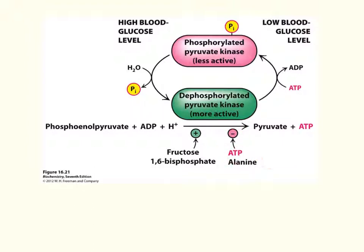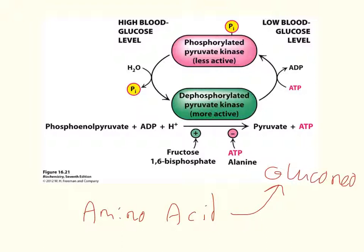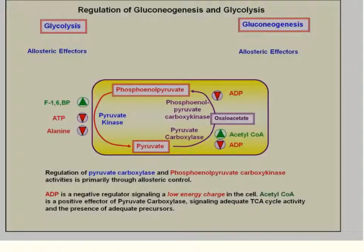Alanine is an amino acid used for gluconeogenesis, so if alanine is high, we don't want to produce more pyruvate — we want to go back the other way. High alanine therefore turns off pyruvate kinase. On the other hand, fructose 1,6-bisphosphate, when high, drives the reaction downward toward pyruvate, activating pyruvate kinase — a feedforward activation signal.